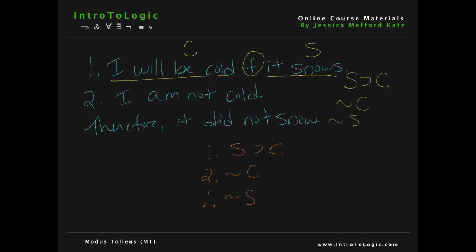According to modus tollens, if we have a conditional — which in the first premise we do — and the negation of the consequent, which in the second premise we have the negation of C, so we have not C, we can derive the negation of the antecedent, which in this case would be the negation of S — not S. As you can see, this is a very clear example of modus tollens and how we may use it in our everyday reasoning.